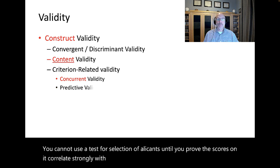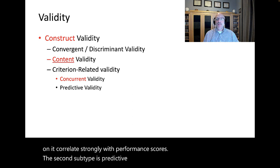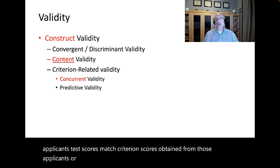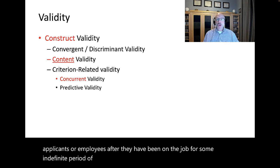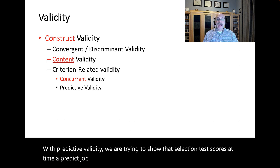The second subtype is predictive validity. This is the extent to which applicants' test scores match criterion scores obtained from those applicants or employees after they have been on the job for some indefinite period of time. With predictive validity, we are trying to show that selection test scores at time A predict job performance scores at time B, which is later on.